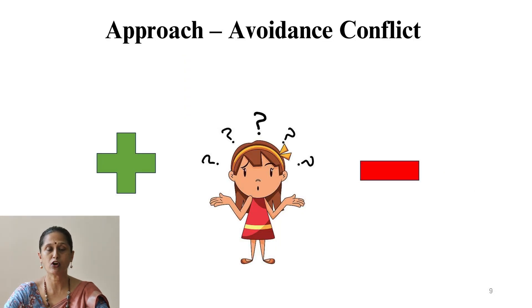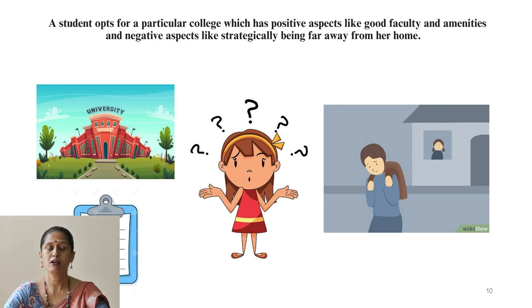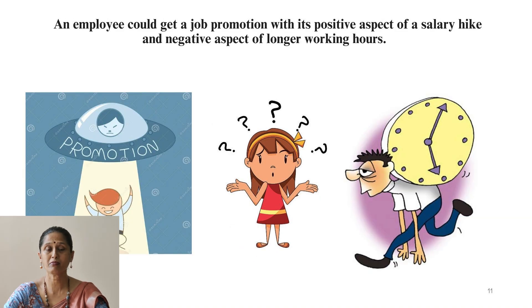Approach-avoidance conflict occurs when there is a single option having both positive and negative aspects. For example, a student opts for a particular college which has positive aspects like good faculty and amenities, but a negative aspect of being far away from home. Yet another example: an employee could receive a job promotion with the positive aspect of a salary hike but the negative aspect of longer working hours.